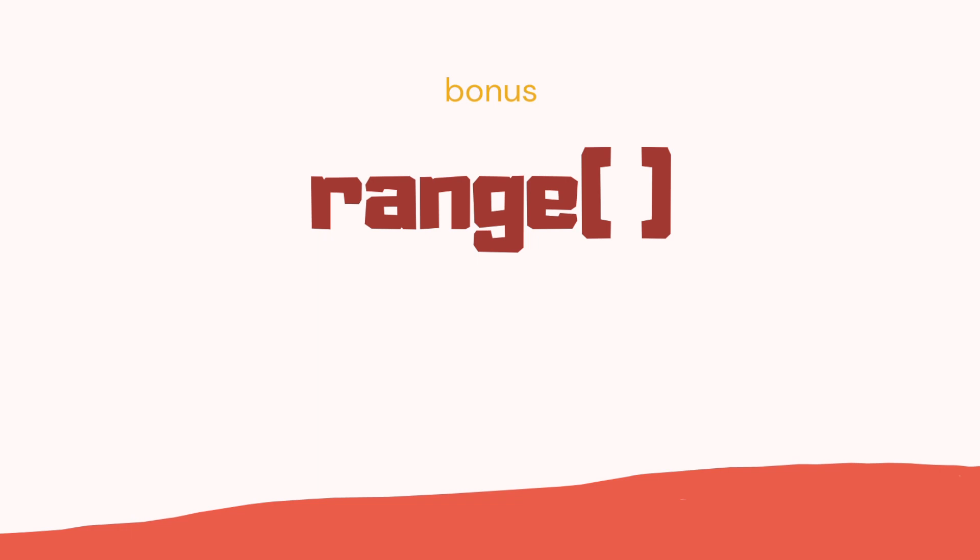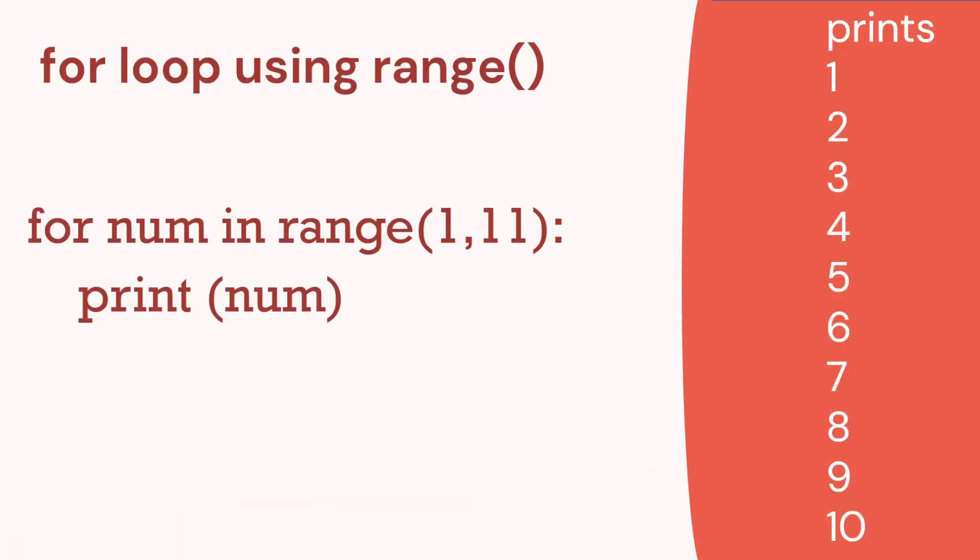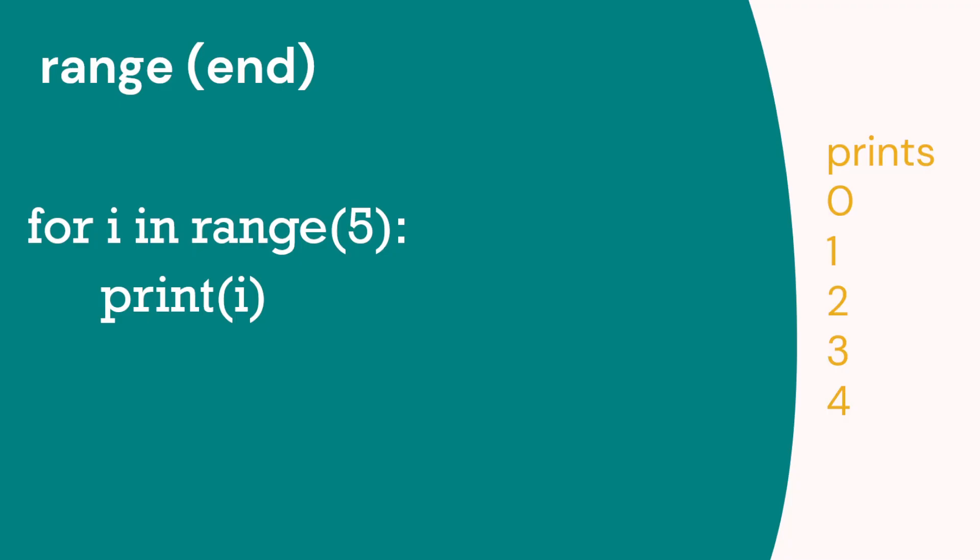The bonus section on range. So here you can see we used range before to print numbers 1 to 10. We used the word range and had 1 to 11 in brackets. Now we can use range with one number. So here we've got range 5. This starts at 0 and prints up to the number but does not include the number in brackets. So going up to 5 will start at 0 and print up to 4. So it does print 5 numbers: 0, 1, 2, 3, 4.